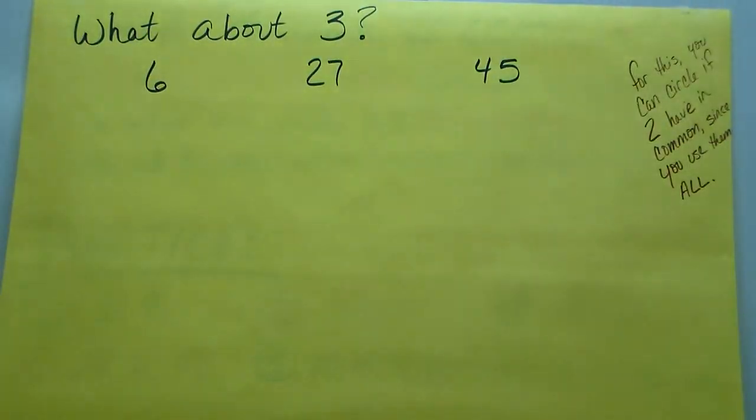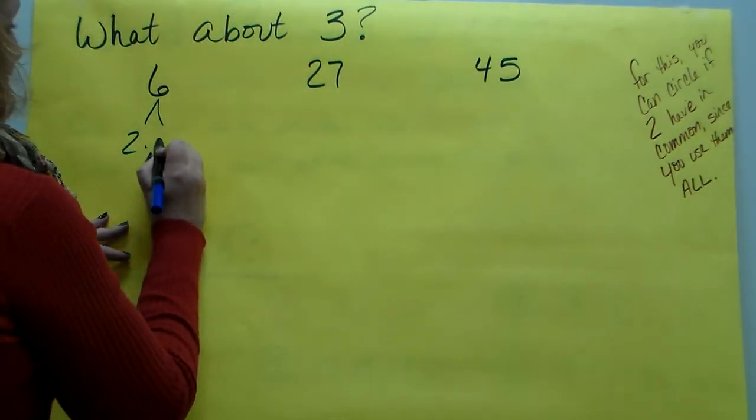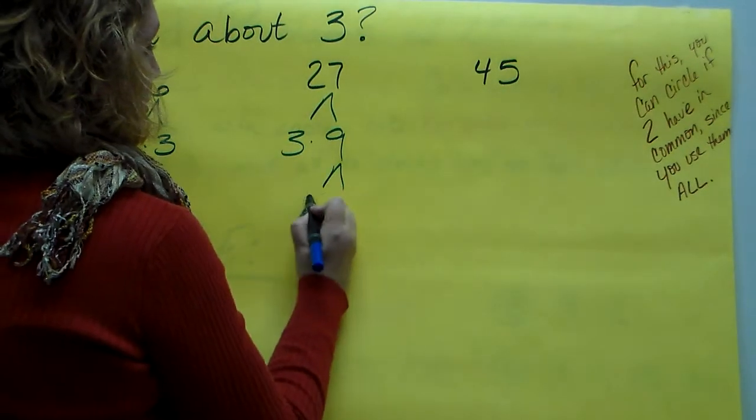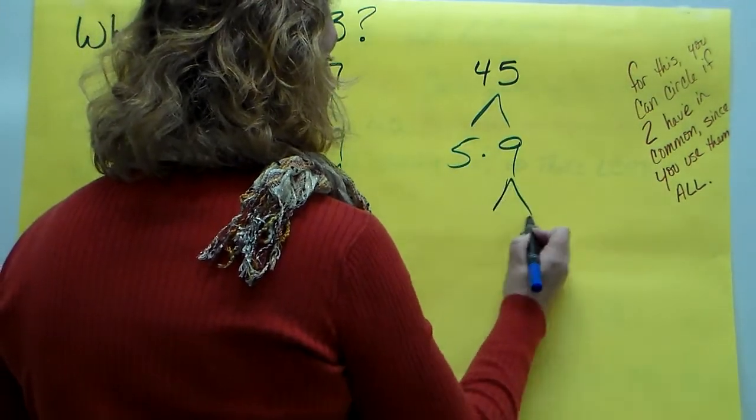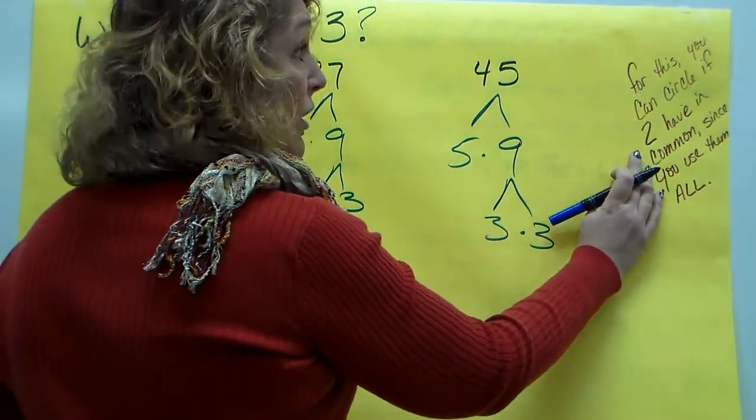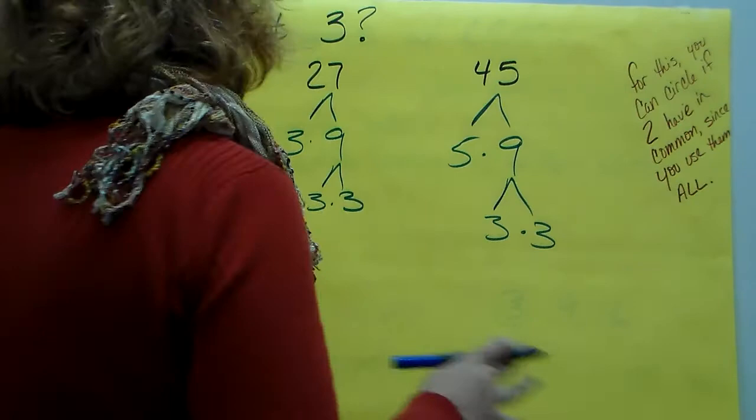What happens if we have three or more numbers we have to factor together? So first we're going to start by making a factor tree. This is 3 times 9, which is 3 times 3. This is 5 times 9, which is 3 times 3. For this, you can circle if only two of them have in common since you have to use all the numbers.